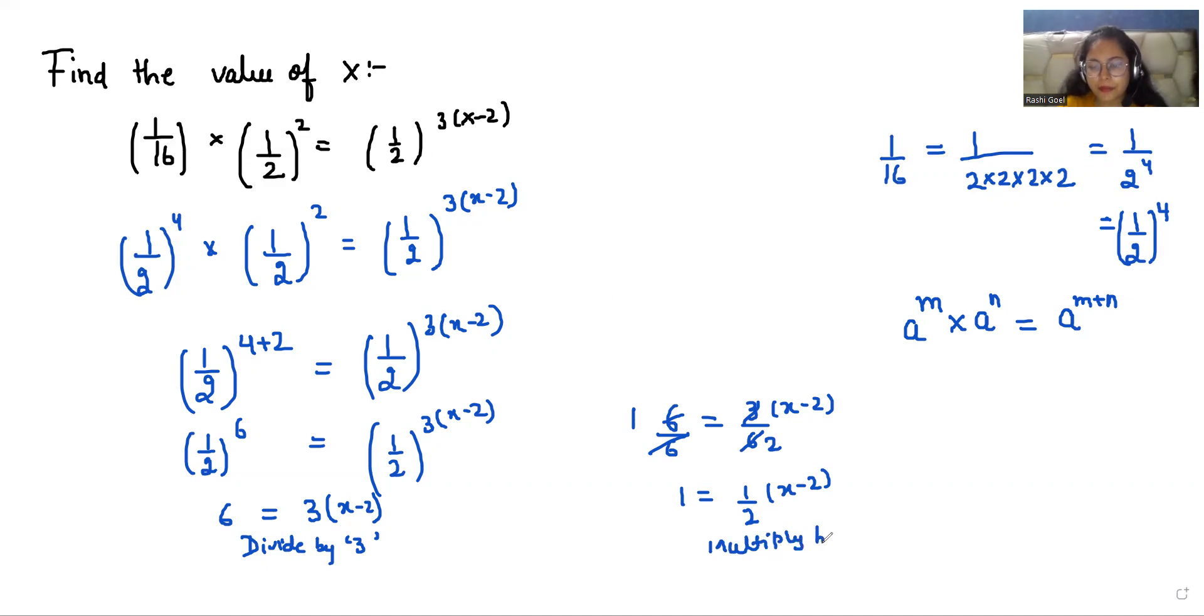Now I'm going to multiply both sides by 2. So 2×1 = (2/2)(x-2). We can eliminate the 2s, so 2 = x - 2.